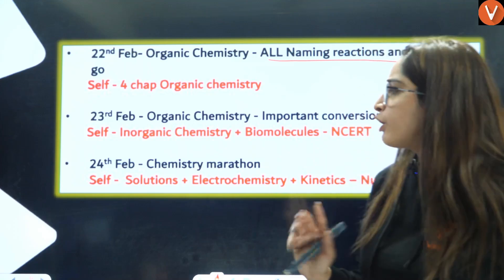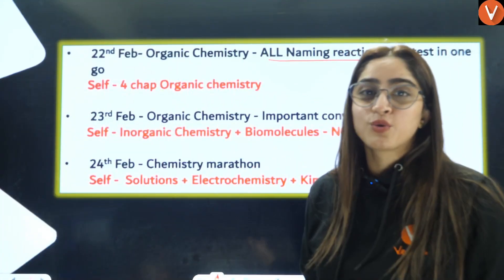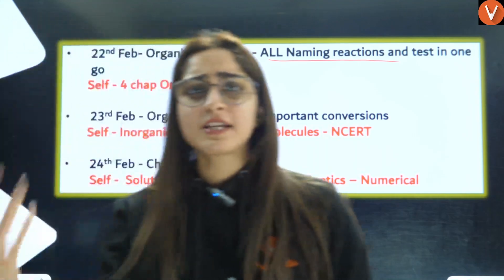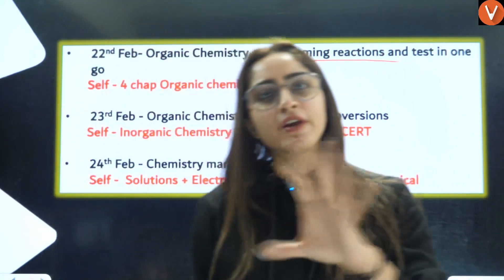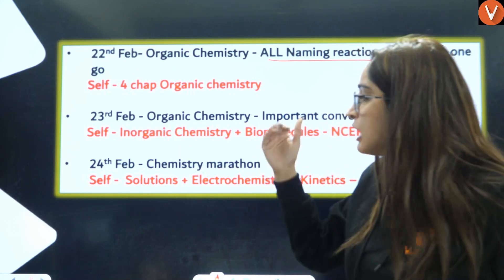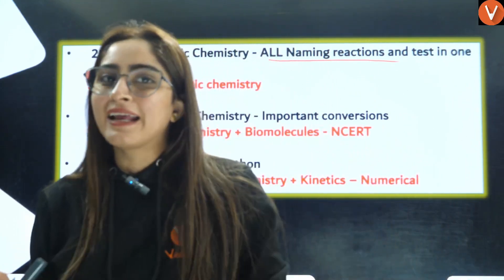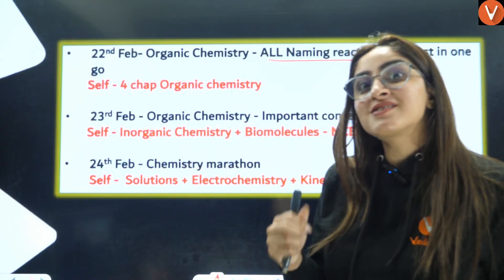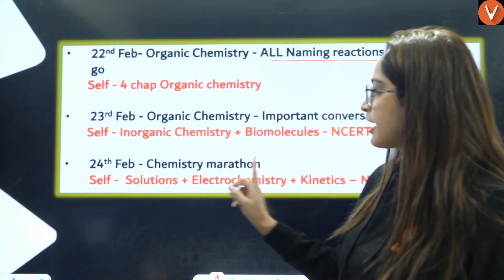Next is 24th of February. By this point you might be getting into the zone of chemistry, because coming out of physics and jumping into chemistry is itself a task. You will have already completed organic chemistry and inorganic chemistry self-study, and you are left with physical chemistry. On 24th of February, I will teach you a Chemistry Marathon — all chapters. The reason I sequence it this way is that reactions, inorganic chemistry, and biomolecules are memory-based. When you sit in the Chemistry Marathon class, it will act as your second or third revision, so you won't need any other revision after that.